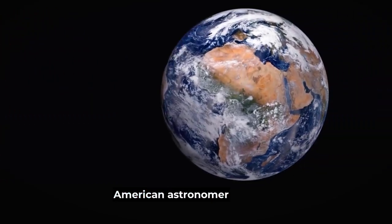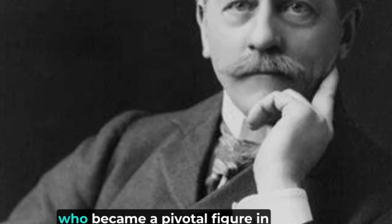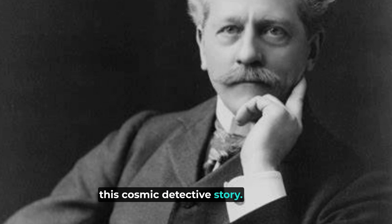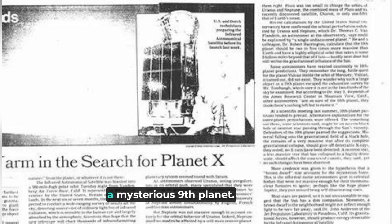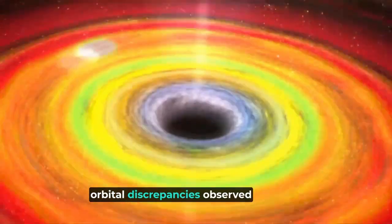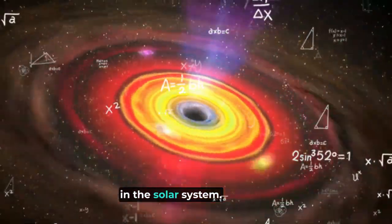Enter American astronomer Percival Lowell, who became a pivotal figure in this cosmic detective story. In the early 1900s, Lowell proposed the existence of what he called Planet X, a mysterious ninth planet. His hypothesis was not just a wild guess, but was based on meticulous calculations and observations of orbital discrepancies observed in the outer solar system.